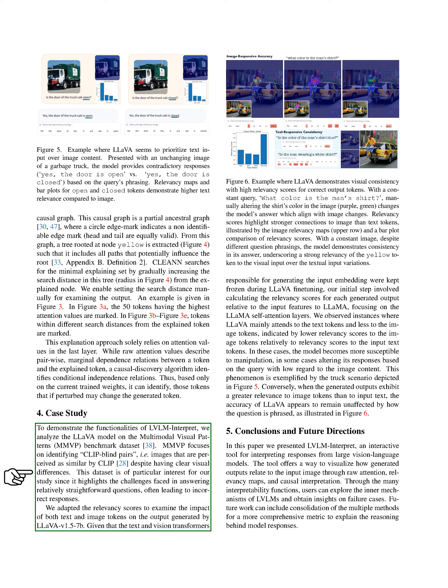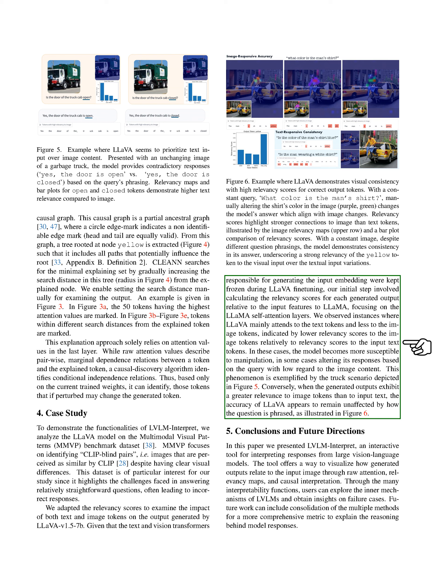To demonstrate these concepts, we analyze the LLaVA model on the MMVP dataset, focusing on understanding how text and image tokens impact the model's output. We found that in some cases, the model pays more attention to text tokens than image tokens, making it vulnerable to manipulation based on the query rather than the image content. This is illustrated by the truck scenario.